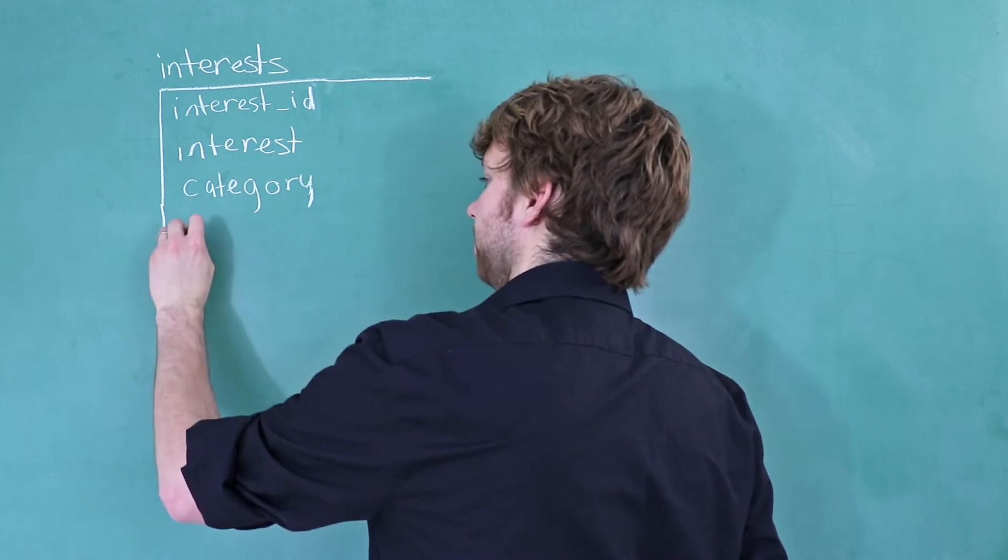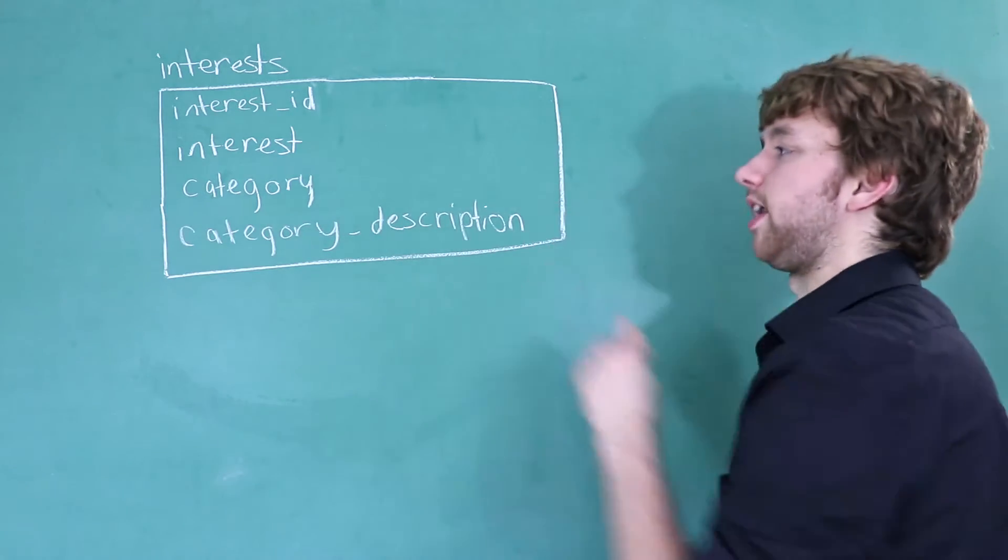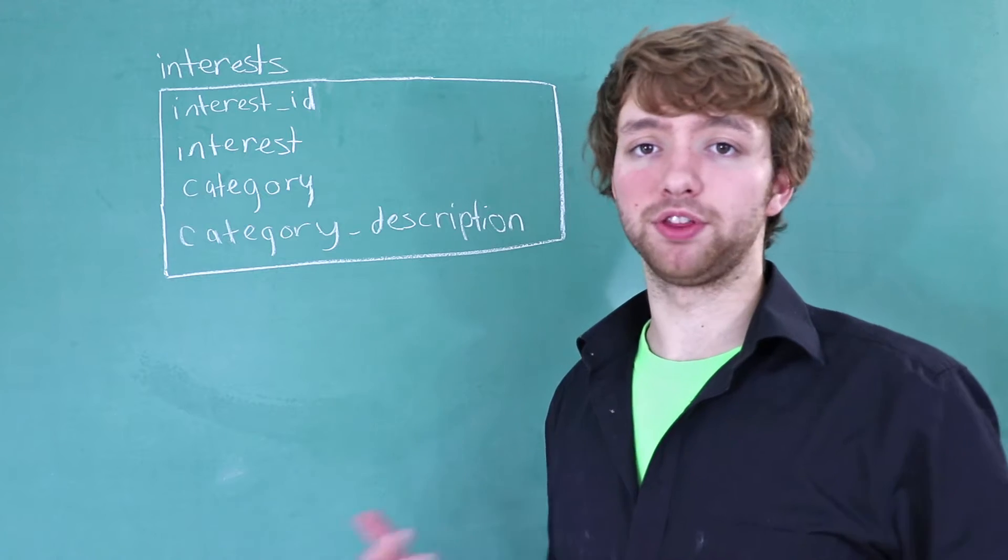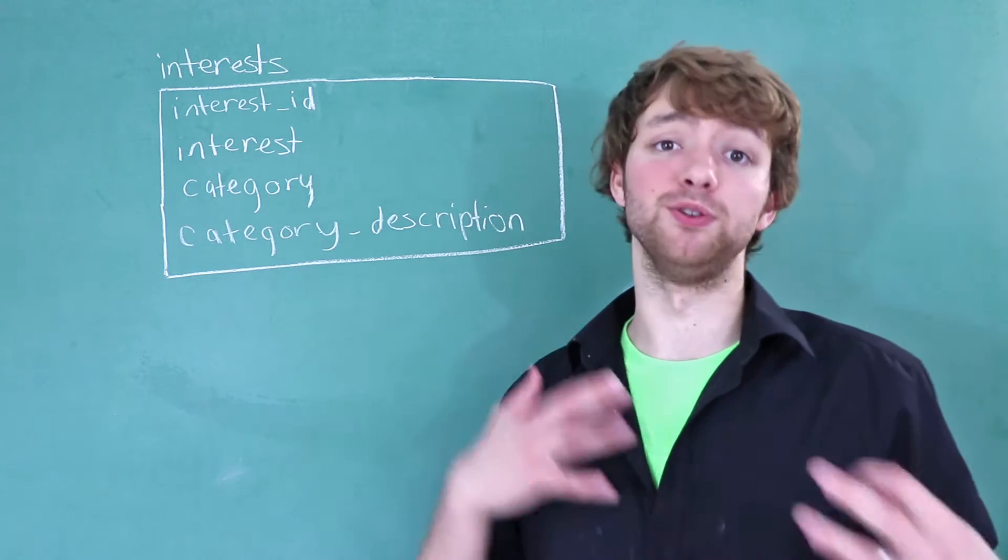And now let's say we add a column to this. This is a violation of third normal form, but I actually haven't even explained what third normal form is, so I should probably do that first.